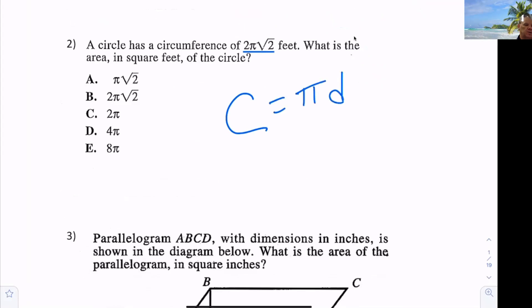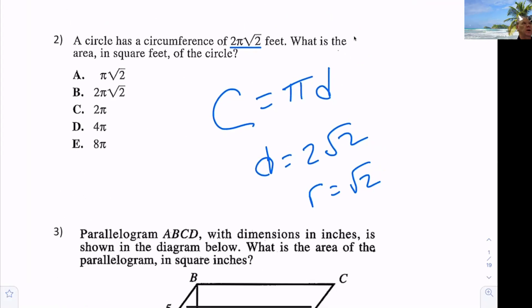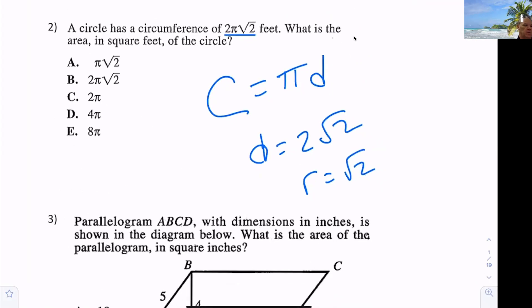So that means that the diameter is equal to two radical two. Do you agree with that? Which means that the radius is radical two. And if the radius is radical two, the area of a circle is pi r squared. So radical two squared is two. Two pi.